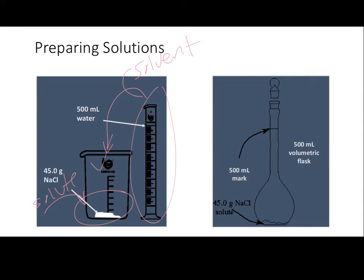Another approach to preparation of solution is going to be the utilization of something known as a volumetric flask. The nice thing about the volumetric flask is that the total volume of the solution has already been calibrated for the container. There's always a mark on the volumetric flask that will indicate the point at which you have reached 500, 200, or 100 milliliters of solution volume.